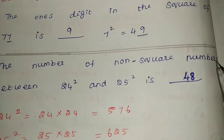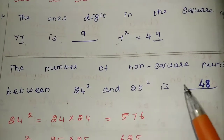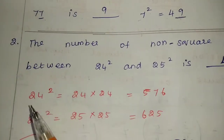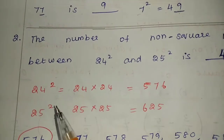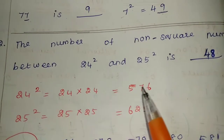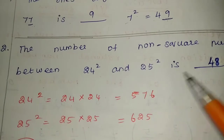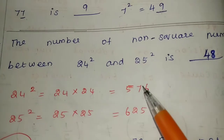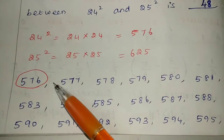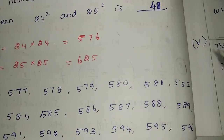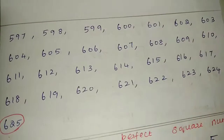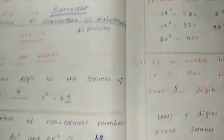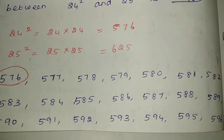The number of non-square numbers between 24² and 25² is dash. This has 2 methods. First method: 24² is 576 and 25² is 625. The numbers between 576 and 625 — counting those values, the continuous numbers between them is 48.